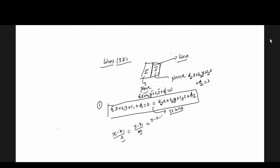There is no confusion. There is a straight line equation. If I find the direction ratio and divide, I will find it automatically. From the direction ratio there is no difference. We can divide and find the direction.